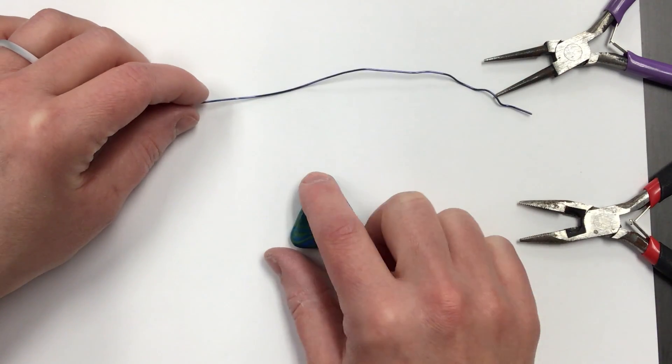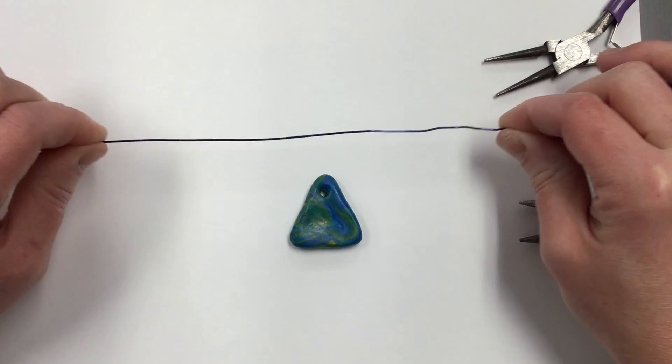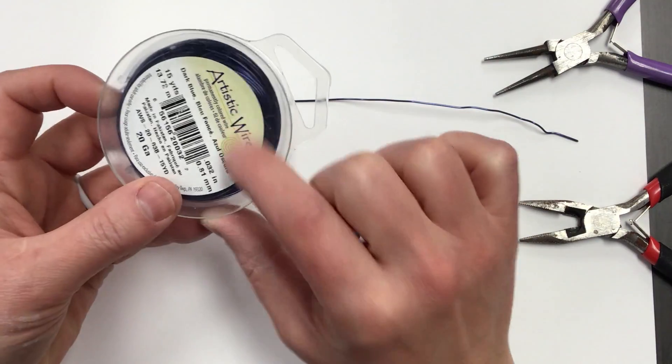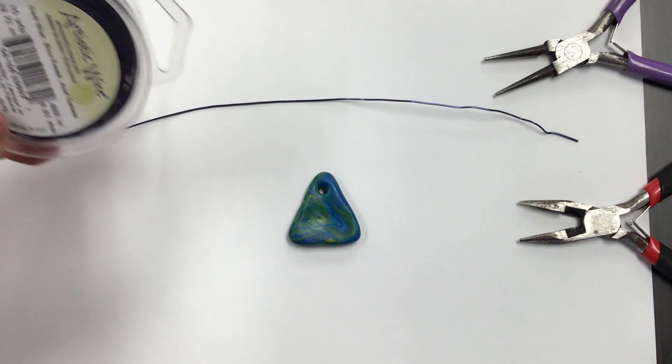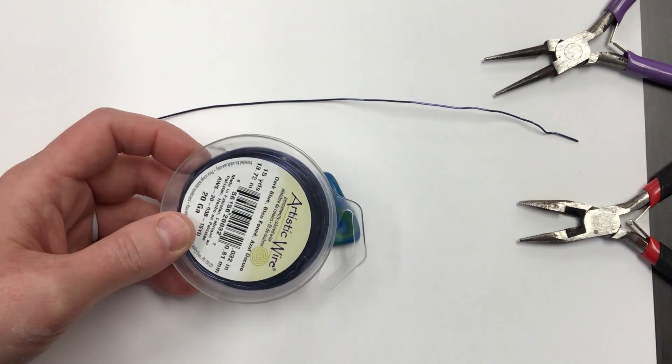So for my pendant, I need my pendant piece that has a hole in it. I need a piece of wire that I've cut off of one of these artistic wire options. Now there are different colors, so remember you may choose something that stands out or you might choose something like I did that blends in.